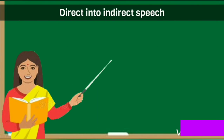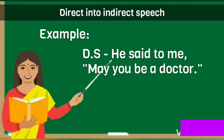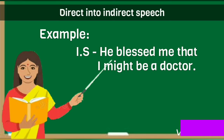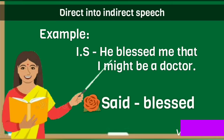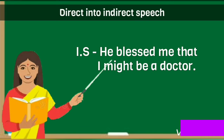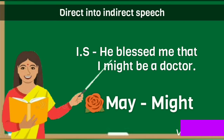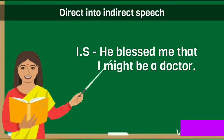Next, we can convert optative sentences from direct speech into indirect speech. For example, direct speech: 'He said to me, may you be a doctor.' Notice that inverted commas are used in direct speech. Indirect speech: 'He blessed me that I might be a doctor.' Notice the changes in indirect speech. The verb said changes into blessed — said is in past form, so past tense blessed is used. Next, conjunction that is added. The pronoun you changes into I, and instead of may, the past tense might is used, but the object remains the same.